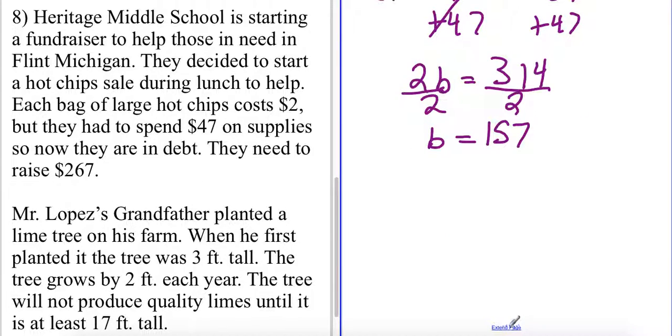Now lastly we have an example featuring the lime tree. We know the lime tree originally was 3 feet tall. It grows, I'm going to highlight that grows part because I know that's a positive value. It grows by 2 feet each year and won't produce quality limes until it's 17 feet tall.